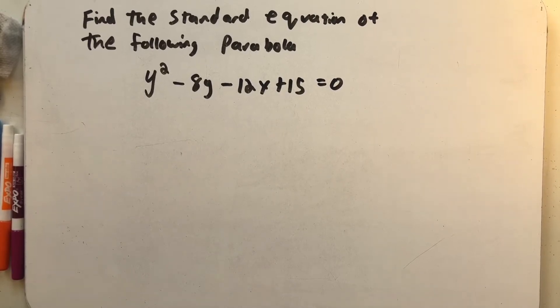Find the standard equation of the following parabola: y² - 8y - 12x + 15 = 0.